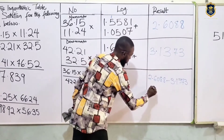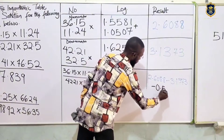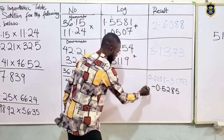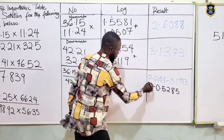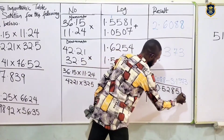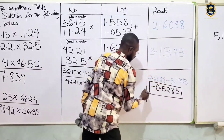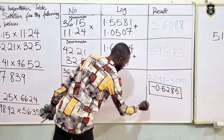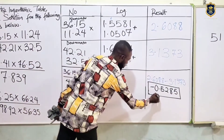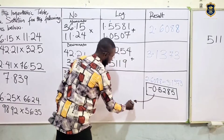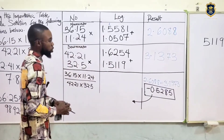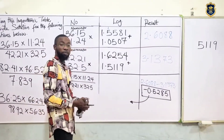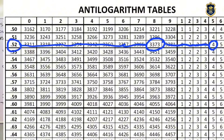That means we will have 2.6088 minus 3.1373, which gives us minus 0.5285. That's what we've got — that is our result. But that's not all. What we'll do now is to look for the antilogarithm. After the log step, we'll look for the antilog.